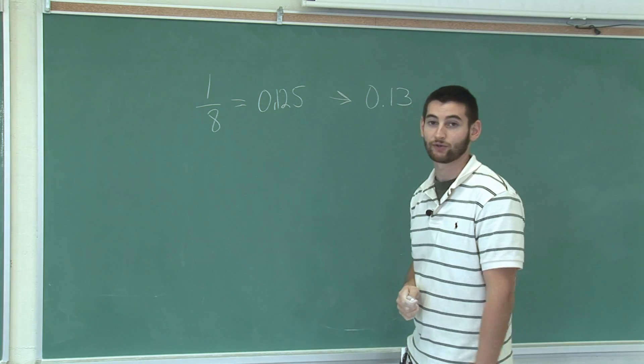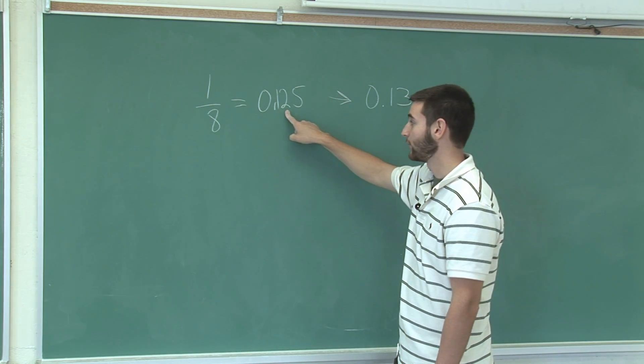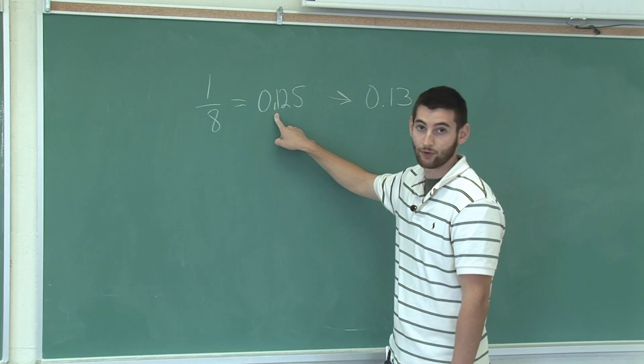If we were to round it to only one decimal place, we would look at the two, which is not great enough to warrant rounding, and we would be rounding to 0.1 only.